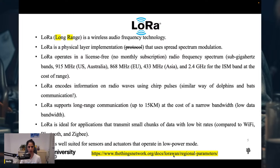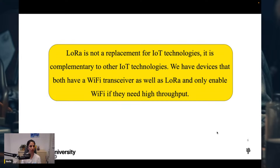In the documentation, under LoRaWAN regional parameters, you will see that different frequency bands are applied when setting up your device. If you are in Europe, you need to use 868 MHz. Note that LoRa is not a replacement for IoT technology — it is complementary. We have devices that include both a Wi-Fi transceiver and LoRa, and you should only enable Wi-Fi if your device needs high throughput.